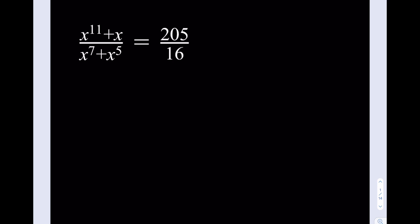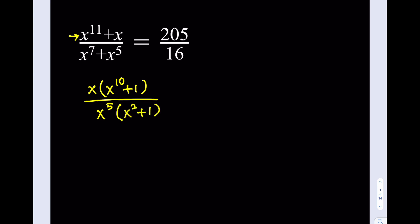Let's get started. There are obviously different ways to approach this. If you cross multiply and put it together you're going to come up with a really hard equation to solve — it's going to be like an 11th degree equation and it's just going to complicate things. So I'm going to manipulate this a little bit. I'll start with the numerator and take out an x, writing it as x times x to the 10th power plus 1. At the bottom, x to the 5th is a common factor, so I'll take that out and end up with x squared plus 1. And this whole thing is equal to 205 over 16.